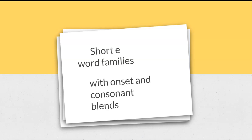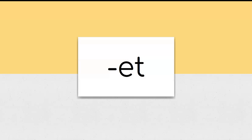Short E word families with onset and consonant blends. The pattern is 'et.' Let's sound it out: E, t, et. Remember, if you know the pattern, you can read and write the word. Let's get started.